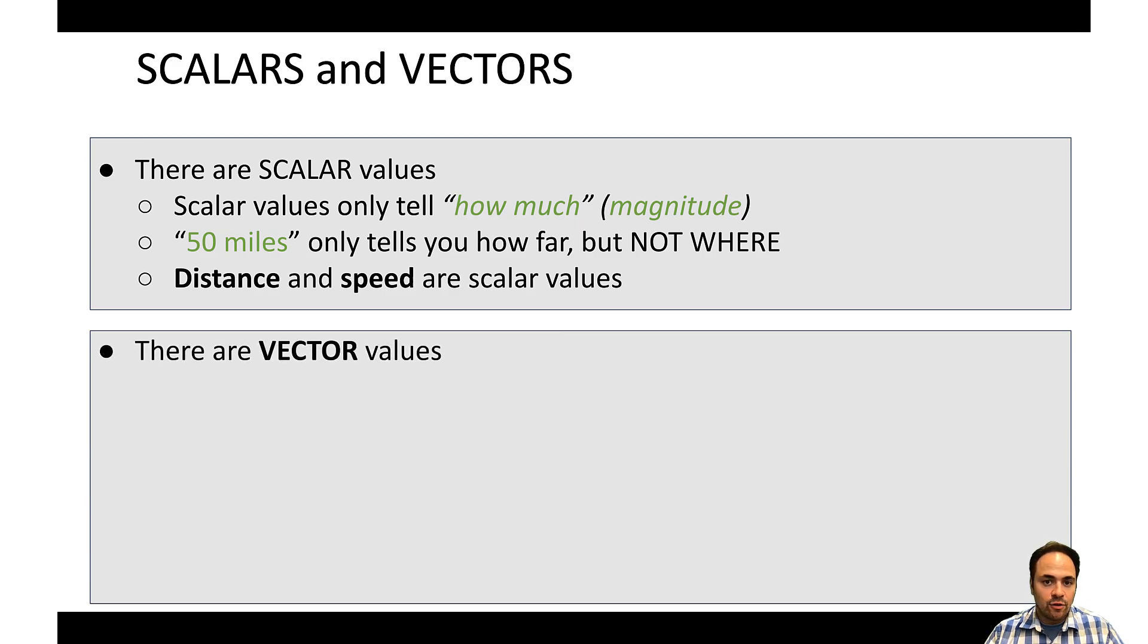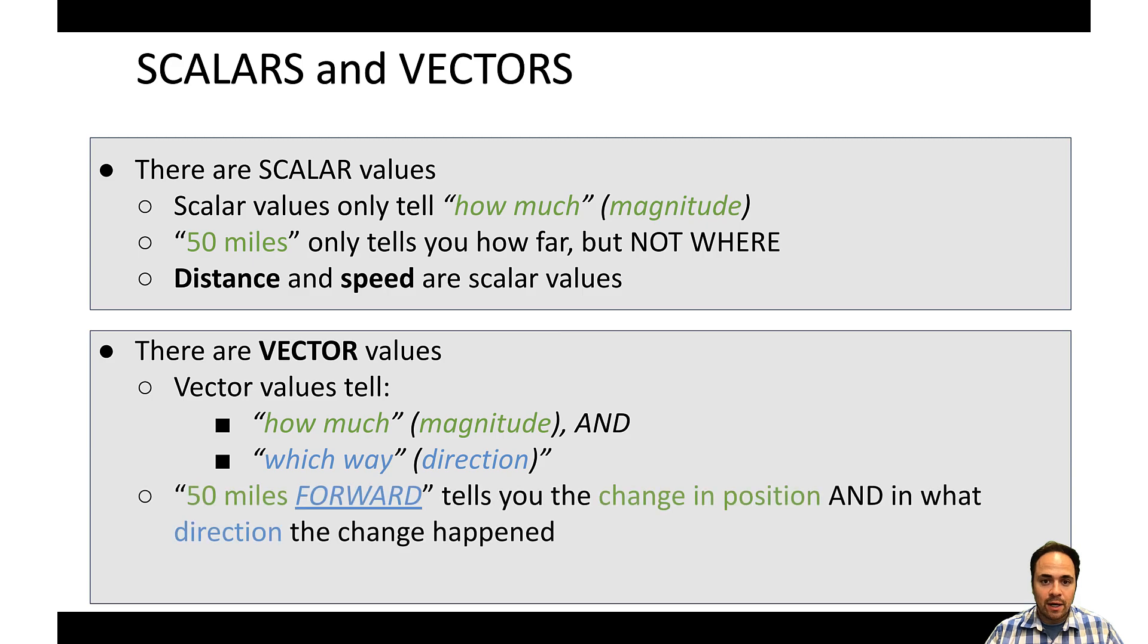Now there are types of values that give you two pieces of information, and those are vector values. Vector values not only tell you how much, that magnitude, but they also tell you in what direction. And that's really key when it comes to things like velocity or position. Position and velocity are vector values. So for example, 50 miles forward not only tells you how far, but it also gives you a where as well.